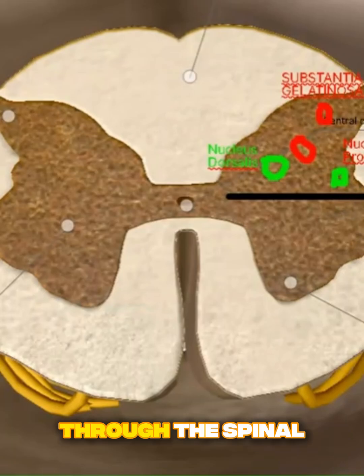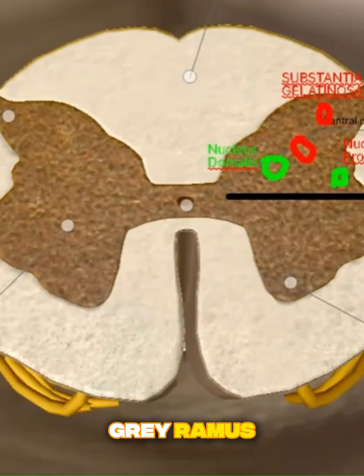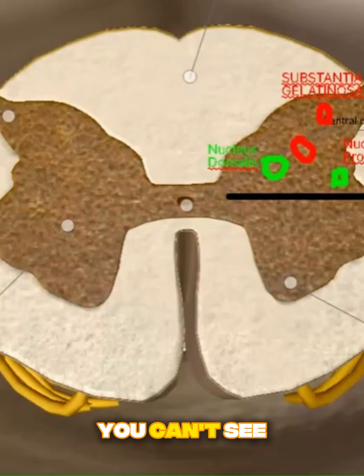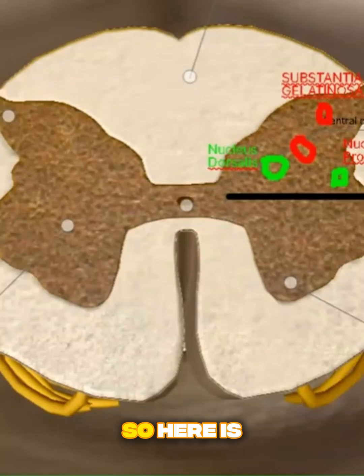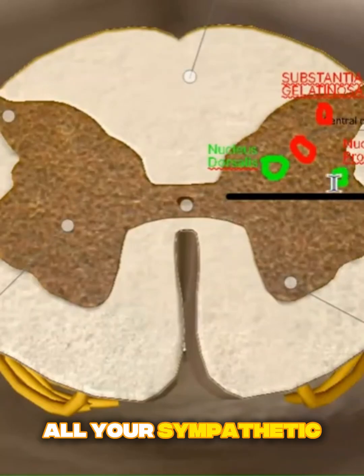They will pass through the spinal nerve. And through the spinal nerve, they'll go through the gray ramus. The gray ramus will communicate with the sympathetic chain on the sides. You can't see them here, but once we do autonomic nervous systems, we'll go into more details. So here is the source of all your sympathetic supply.